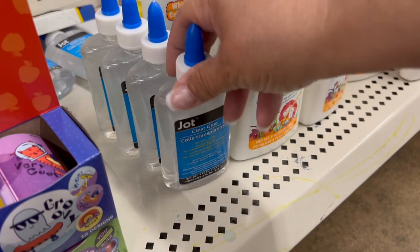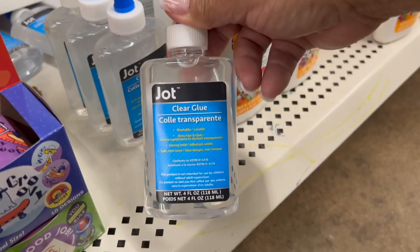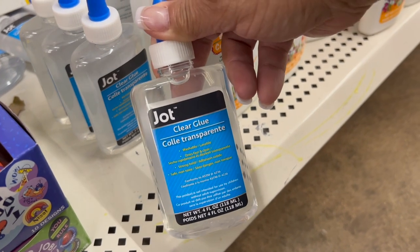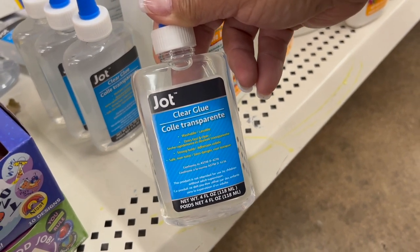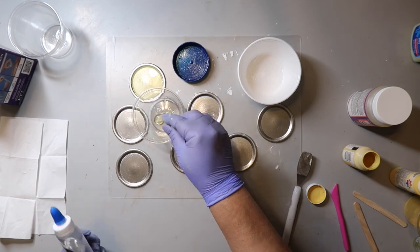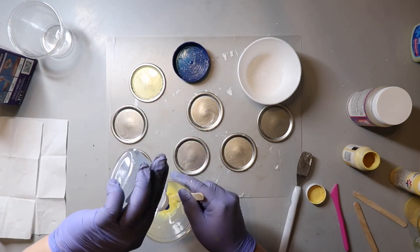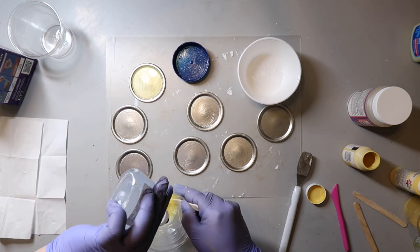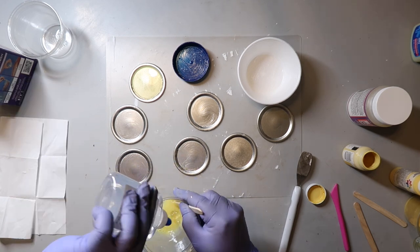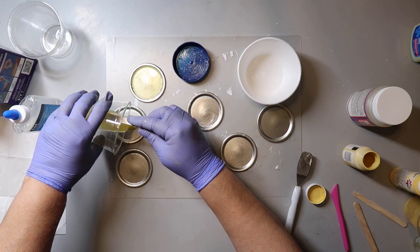For test trial number two, I'm using clear liquid glue that I got from Dollar Tree as well, in the school supply section. Same game plan. I'm just going to use some paint and pour it into this little cup and mix it all together, and then pour it into the jar lid thing that I'm using as a mold.